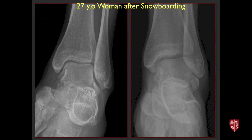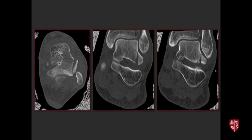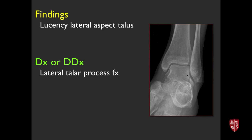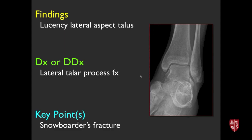Young woman with a snowboarding injury. Radiographs hint at a lucency; CT confirms a definite lucency involving the lateral talar process. This is a so-called snowboarder's fracture, an injury known to occur with snowboarding and similar sport activities. They can be easy to miss on plain film, so it's important to be aware of this injury pattern.